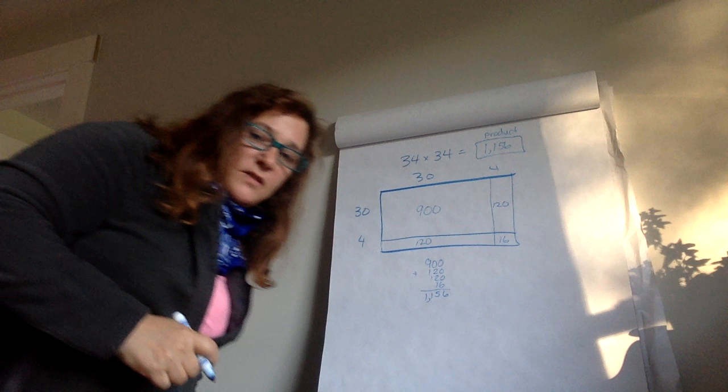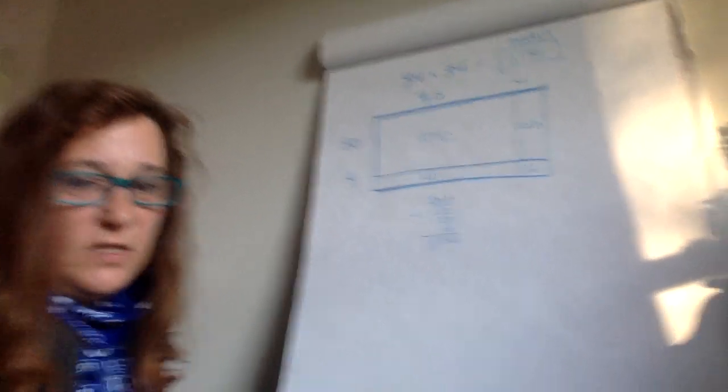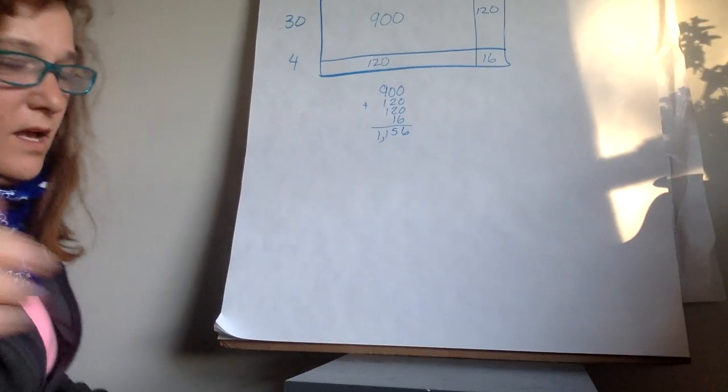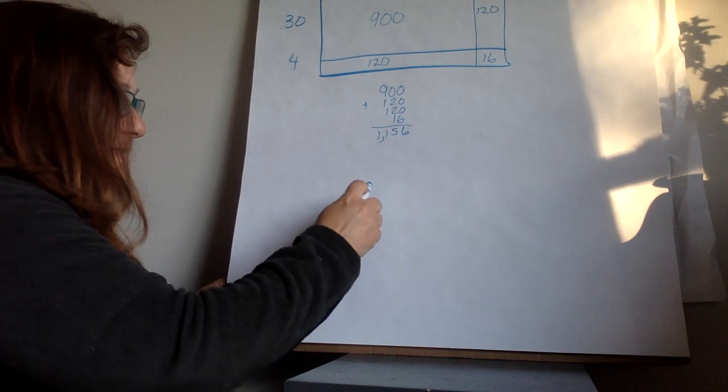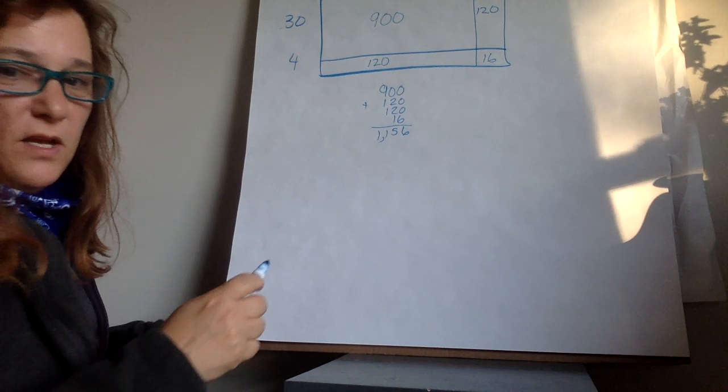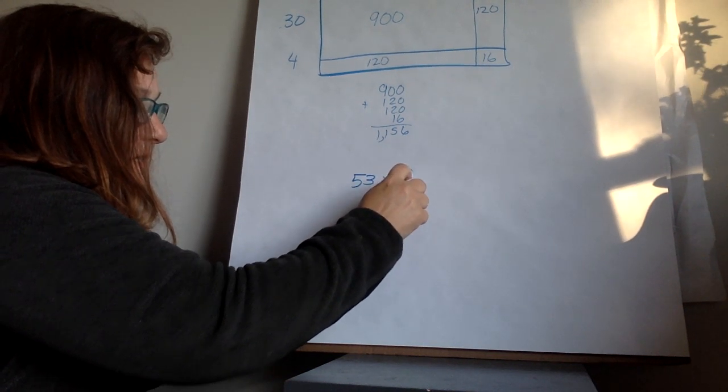So this is just one way that you can do multiplication. And you don't have to make the numbers smaller. Let's say I'm going to do one more really quickly. I have 53 times 16.